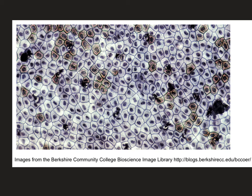Cells are usually fairly easy to spot because they are distinctly shaped and they have nuclei. Nuclei are almost always stained. In this image you can see that there are a lot of cells. Each of these little oddly shaped pieces is its own cell and inside of it has a single nucleus. The cells are all right next to each other, touching, and there's not a whole lot of other extraneous tissue surrounding this particular cell structure.